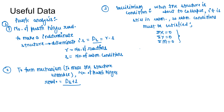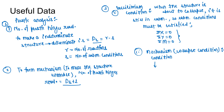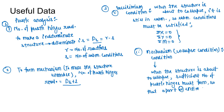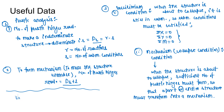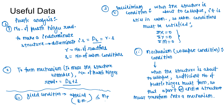The second condition is the mechanism condition, or collapse condition, which states that when the structure is about to collapse, the entire structure must transform into a mechanism. The third condition is the yield condition, which says that when the structure is about to collapse, the bending moment at any section should not exceed the plastic moment — the actual bending moment shall not be greater than the plastic moment.